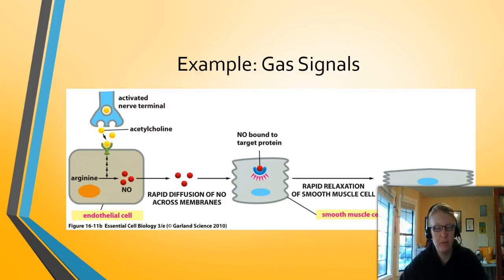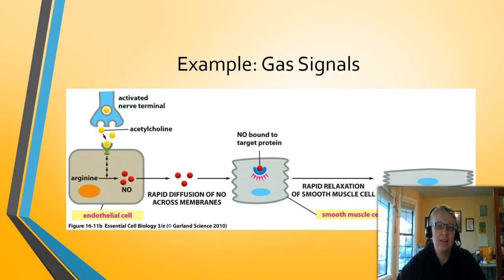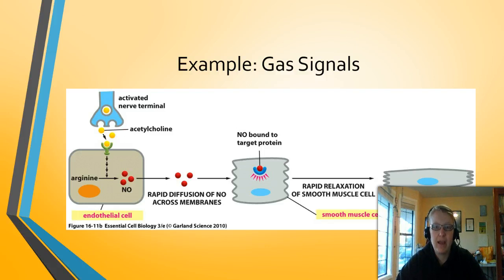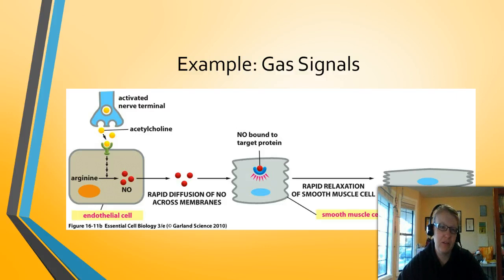Another example is gas signals. We use gas as a drug — you may have experienced this at the dentist — and our cells use this process to rapidly relax smooth muscles. Because gas can easily pass through membranes, it has a very limited and localized effect, staying in a very small area. For example, NO (nitrous oxide) can pass through cells and relax muscle. This is actually how the penis becomes erect. Acetylcholine stimulates the release of this gas from endothelial cells.